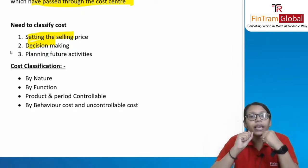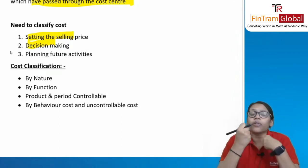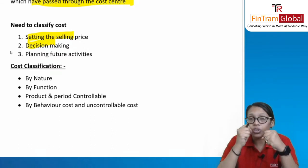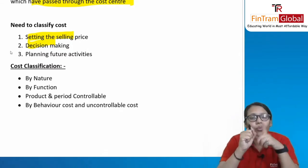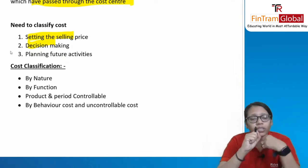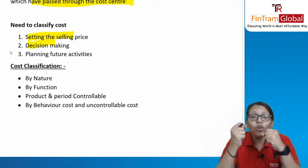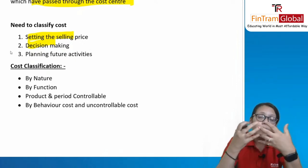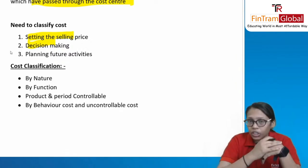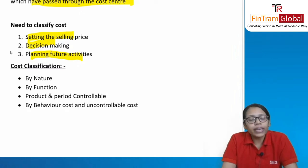Revenue is the benefit and cost is the expenditure incurred to get that benefit — both are very important pillars for any decision. In capital budgeting, we use the NPV technique: present value of cash inflows minus present value of cash outflows. If positive, you can proceed with the activity; if negative, you cannot. Both cash outflow and inflow are essential to take correct decisions, and the same applies to planning any future activity.